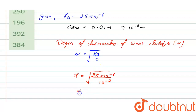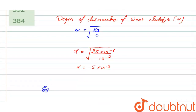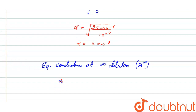We get α = 5×10⁻², and this is the degree of dissociation. Now, the equivalent conductance at infinite dilution is represented by λ∞, and it equals λ at concentration divided by α.